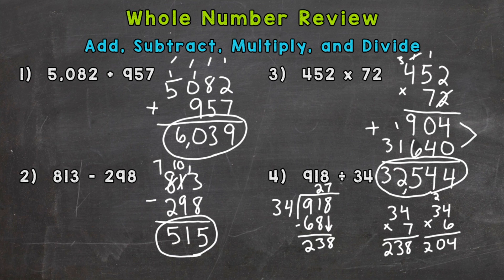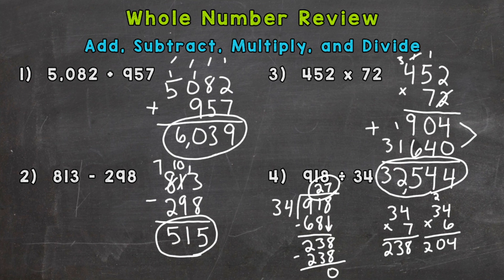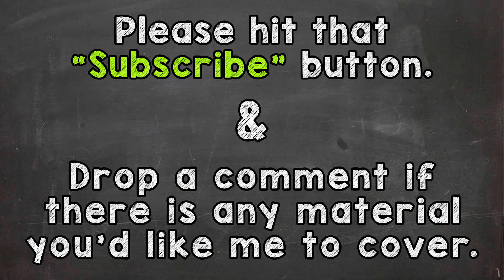So we put a 7 up here, because 238 divided by 34 is 7. We multiply: 7 times 34 is 238. We subtract and get a remainder of 0. So our quotient — the answer to a division problem — is 27. There you have it, that's the whole number review. I went kind of fast because this is meant to be a review or refresher. If you need a more in-depth or slower explanation with more examples, I've put the links to my whole number videos in the description. Hopefully that helped — thanks so much for watching!